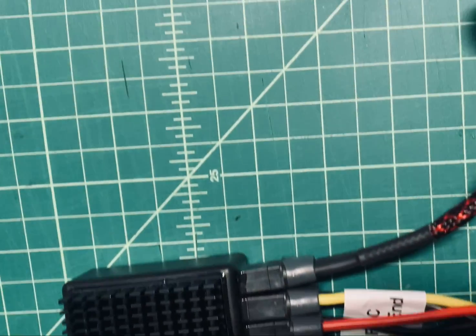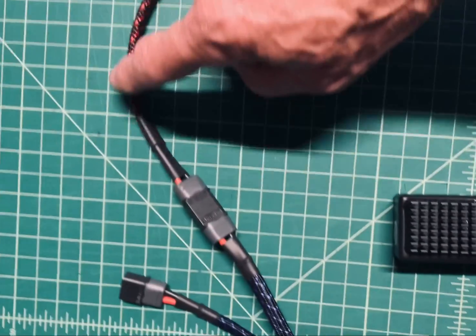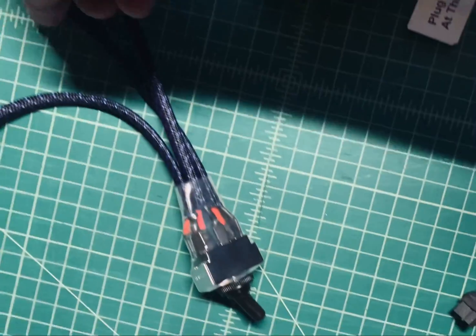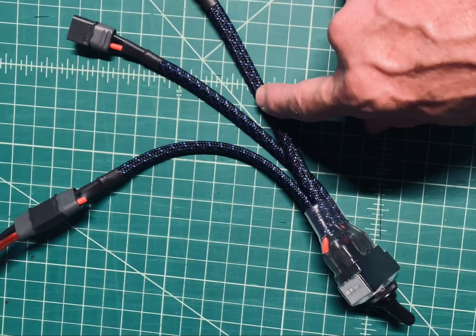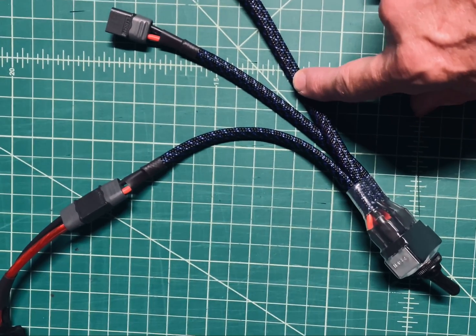From there I have a 24 inch lead that goes to a switch. This switch is the switch to switch between two batteries, but it can be used also as an on-off switch with one battery.